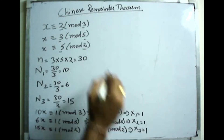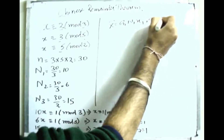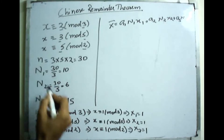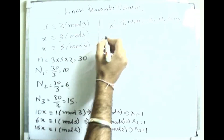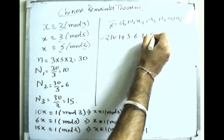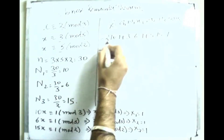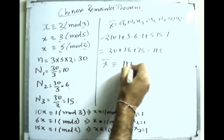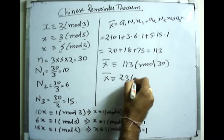Now from the Chinese Remainder Theorem, the simultaneous solution formula is x̄ = a1·N1·x1 + a2·N2·x2 + a3·N3·x3. Substituting all values: 2×10×1 + 3×6×1 + 5×15×1 = 20 + 18 + 75 = 113. The solution is 113 mod N = 113 mod 30, which gives 23 mod 30.